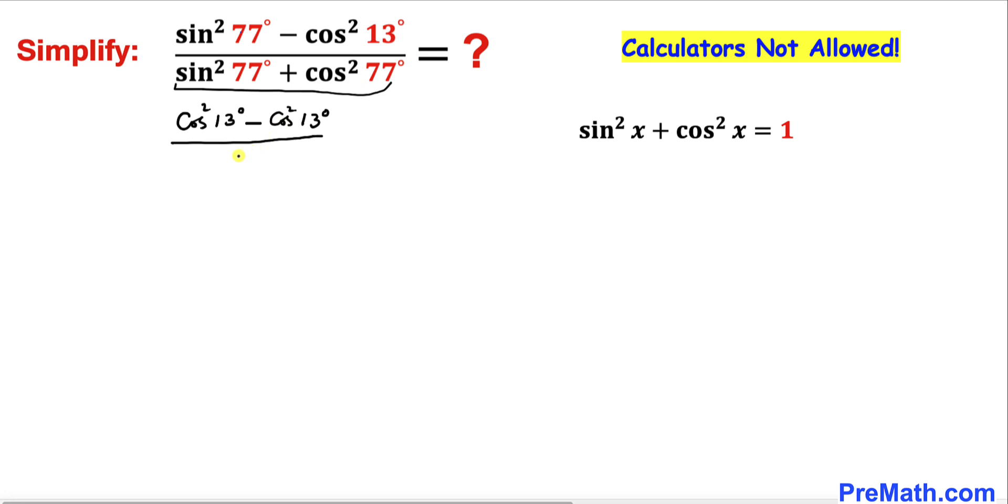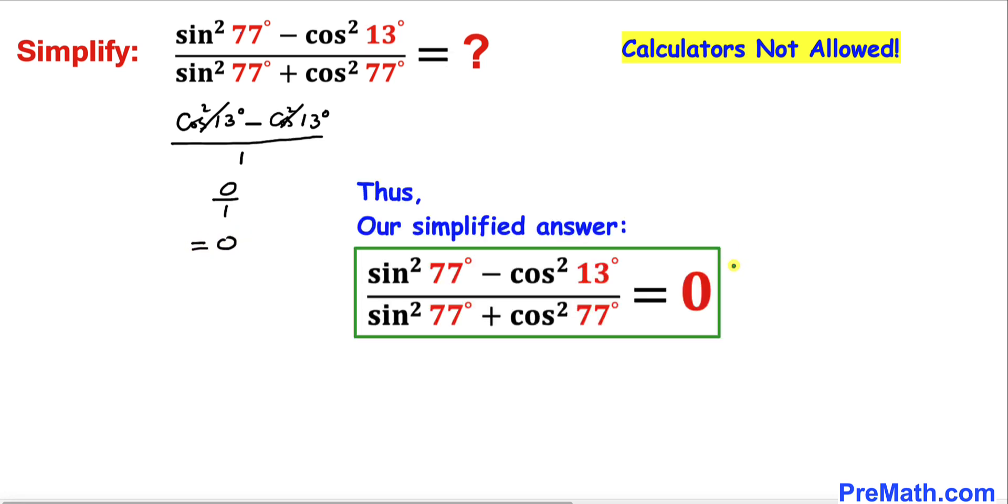At the denominator we can see the numerator terms cancel each other out. So we ended up with 0 divided by 1, which is same as 0. Thus our simplified answer turns out to be 0.